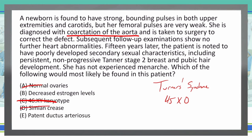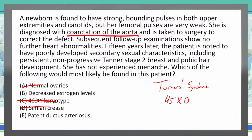Choice E: Patent ductus arteriosus. Sometimes when we have heart and vascular issues, we can see a patent ductus arteriosus. However, Turner syndrome doesn't typically include PDA as part of its sequelae. Also, looking back at the vignette, all the patient had was coarctation of the aorta, and follow-up years later showed no further heart anomalies. So unless it was missed, patent ductus arteriosus does not fit this case.